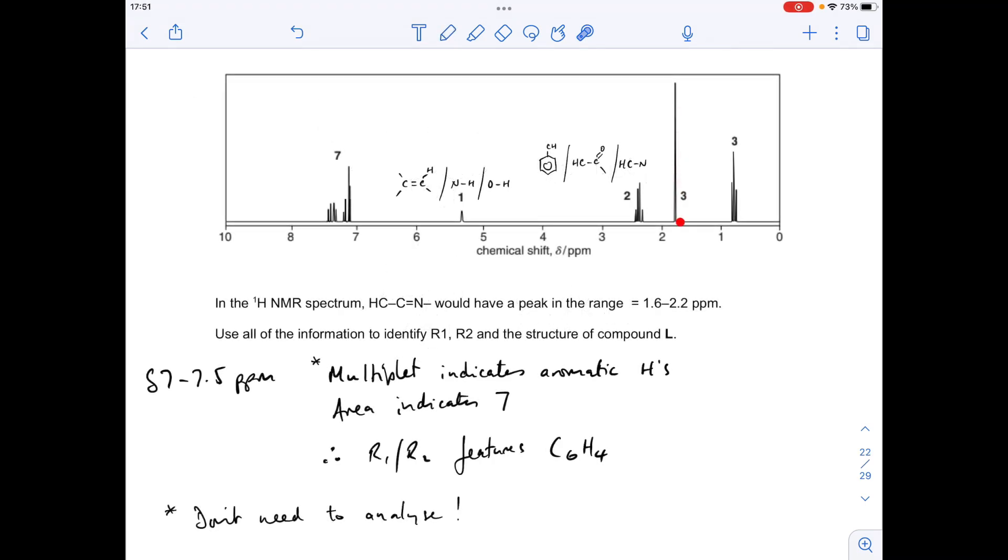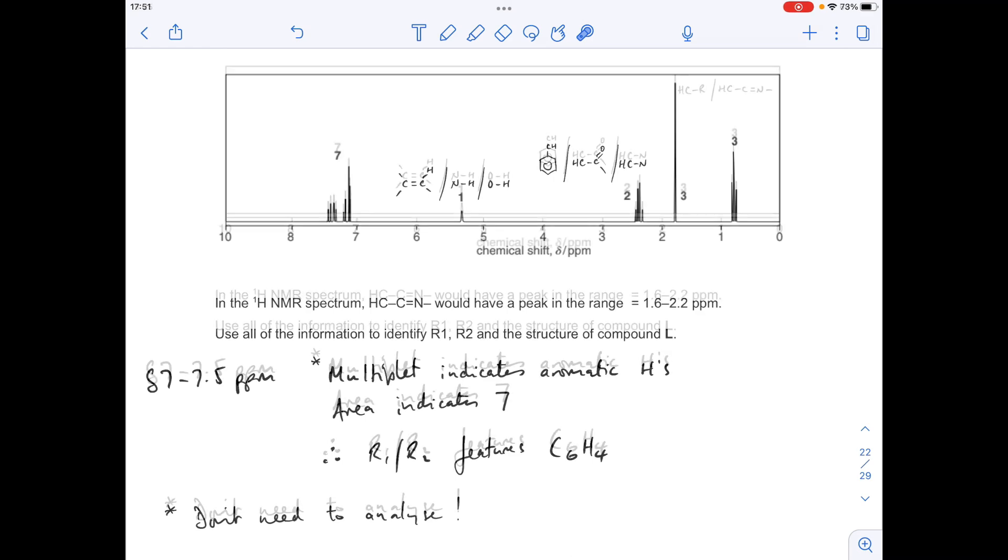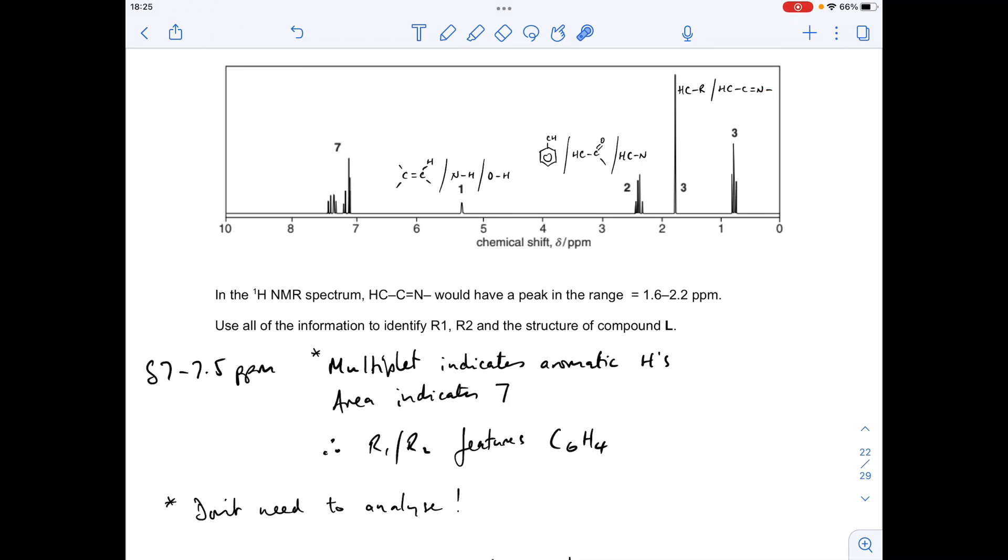Moving on to this signal now. So this one's at around about 1.8 ppm. It's a singlet, so there are no adjacent hydrogens. Area of 3 means that it's a CH3 causing the signal. And in terms of the shift values, these are our possible options. And you'll notice that this one here is this environment given in the extra information.